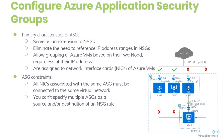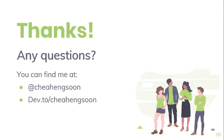Note that application security groups have several limitations. Most importantly, they cannot span virtual networks. That's all for today. You can find me on my Twitter, and for today's blog you can refer to dev.to slash Eng Shin Chia.